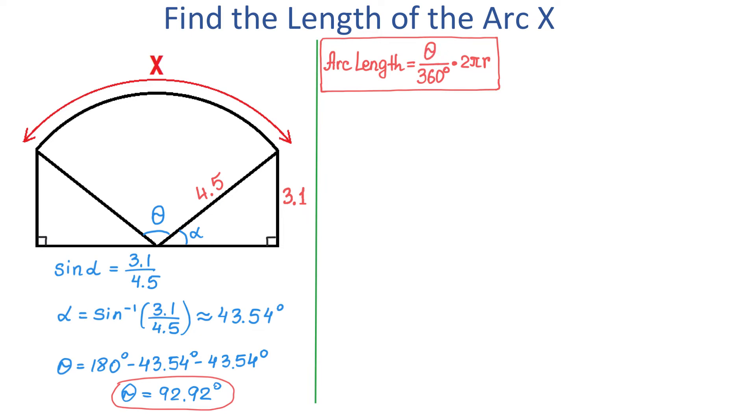And this would be exactly what this angle theta intercepts. So, then, in this formula, let's replace theta with 92.92 and r with 4.5. Then the arc length x equals 92.92 degrees divided by 360 degrees and multiplied by 2 pi times 4.5. Here, we will use a calculator, and we will get that x is approximately 7.3 units. So, we found the length of this arc, and it is approximately 7.3 units.